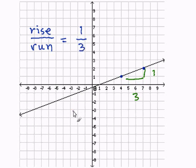Therefore, the slope of this line is one over three. And this completes our problem.